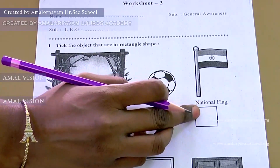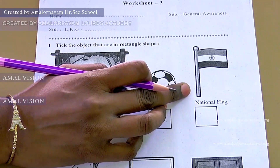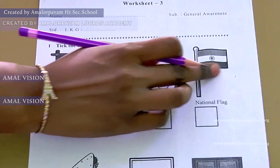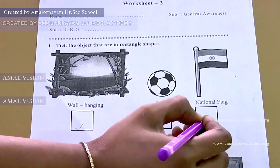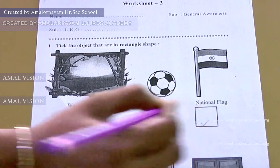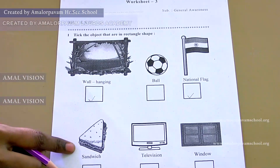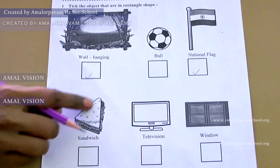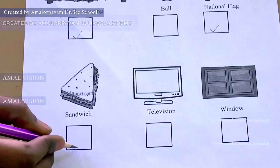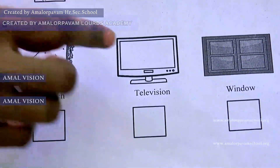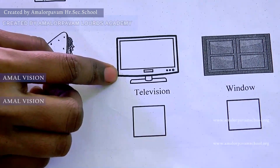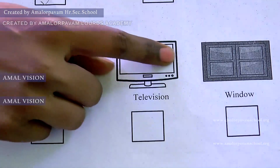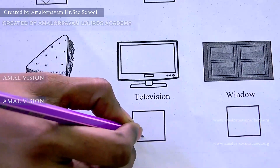What picture is this? This is our national flag. What is the shape of a national flag? It is rectangle. What is this? This is a television. What is the shape of a television? It is in rectangle shape. Put a tick mark here.